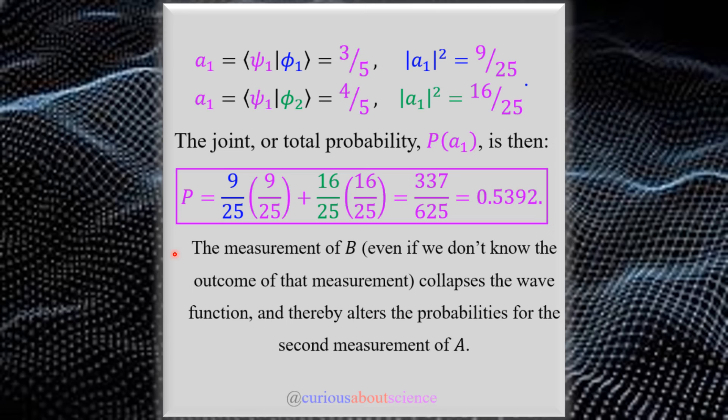The measurement of B, even if we didn't know the outcome of that measurement, collapses the wave function. And thereby, alters the probabilities for the second measurement of A. Again, what we're saying here is that we just don't know what the measurement on B will collapse to. So we have to do the multiplication of probabilities. It should also be known that, if we inadvertently neglected to measure B, the second measurement would be certain to reproduce the result A1.